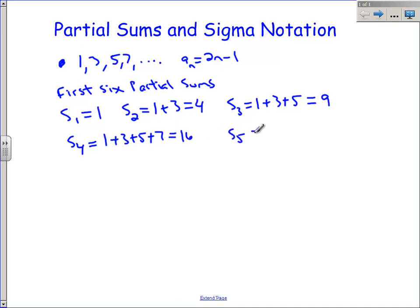S sub 4 is 1 plus 3 plus 5 plus 7, and that's going to give us 16. S sub 5 is the sum of the first five terms, and that works out to be 25. And S sub 6 gives me 36. So I could list out the terms of my first six partial sums like this: 1, 4, 9, 16, 25, and 36.